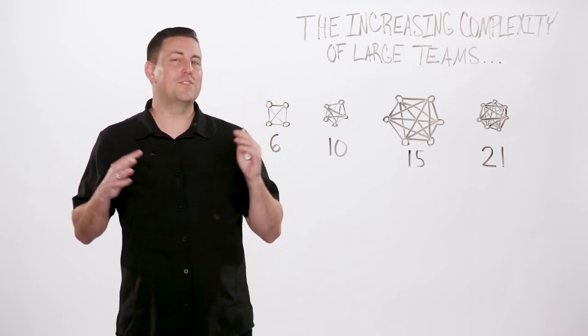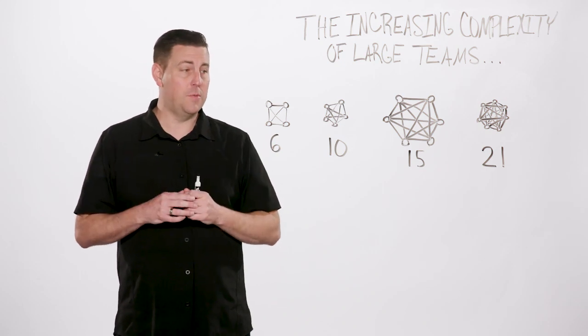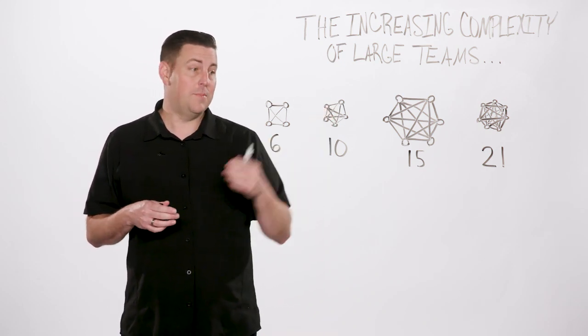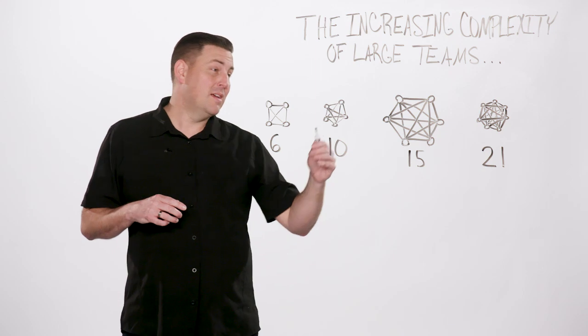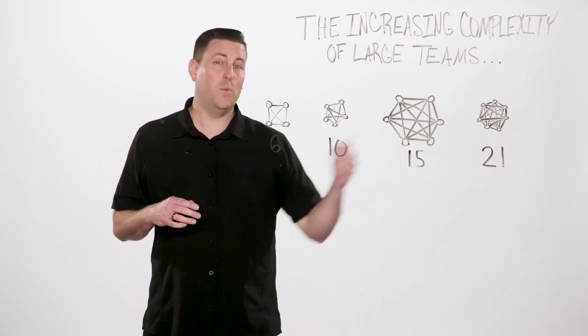If you have a team of four, there's actually six different lines of communication. You move that team to five, ten. Six, fifteen. Seven, twenty-one.